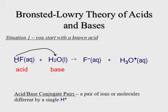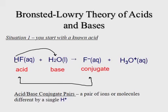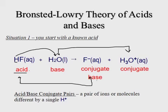The last step is to identify the conjugate acid-base pairs — pairs of ions or molecules that differ by a single H+. HF and F⁻ differ by one H+: HF is the acid, so F⁻ is its conjugate base. For the other pair, H₂O and H₃O+ differ by one H+: H₂O was the base, so H₃O+ is its conjugate acid. Notice that the words acid and base always go together in these pairs.